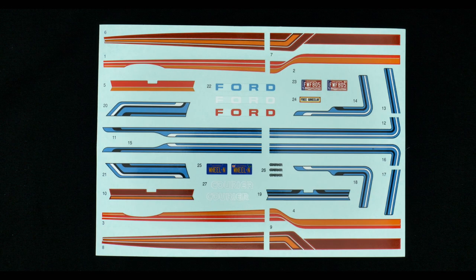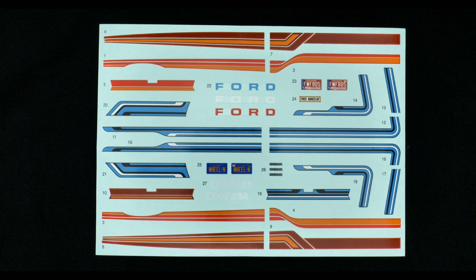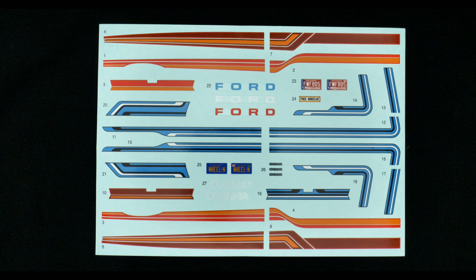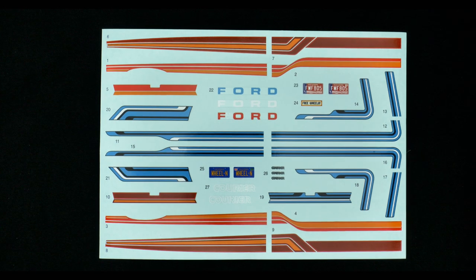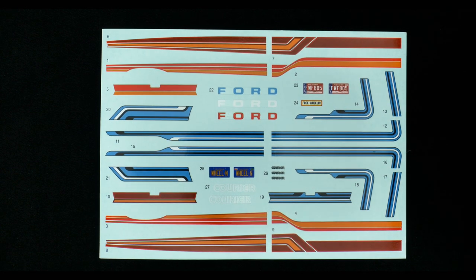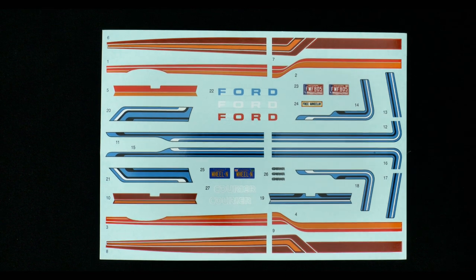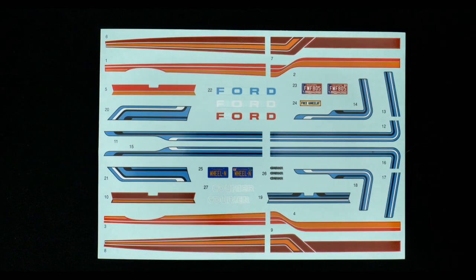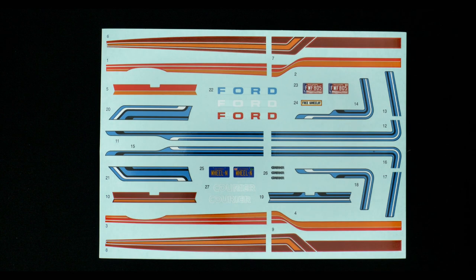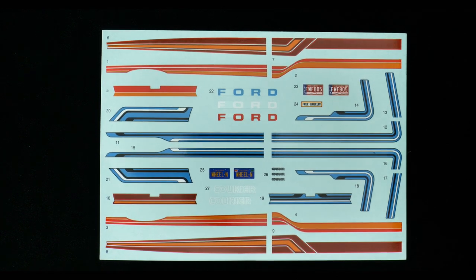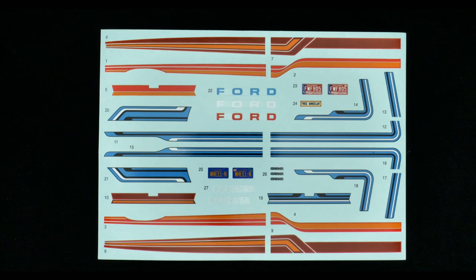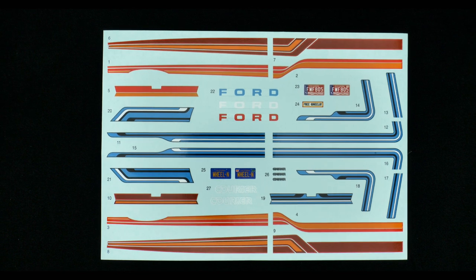And now we're going to take a look at the decal sheet. And you can see it's pretty big. Got some options there. Three different, looks like, you know, two. Two sets of striping. A couple sets of license plates. Some different color Ford decals for the tailgate. Courier badging.